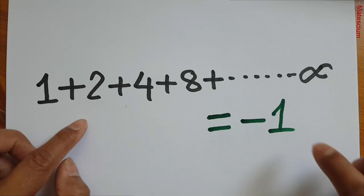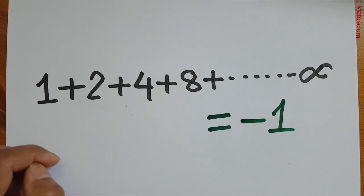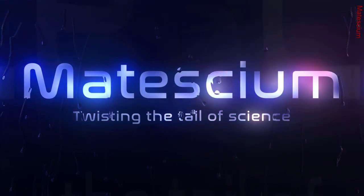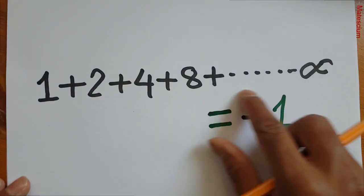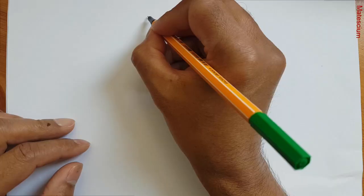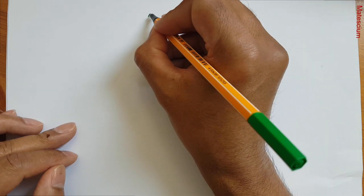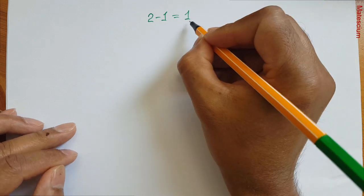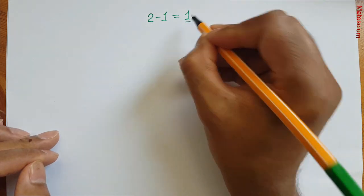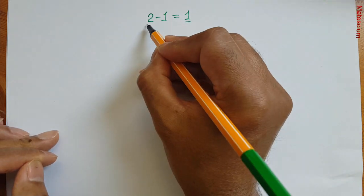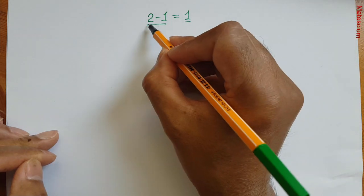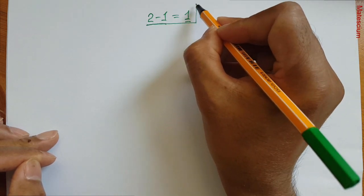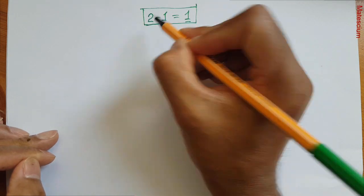Let me show you this series is equal to minus 1 by breaking the rules of mathematics. In order to prove that this long infinite series is equal to minus 1, let's start from the simple way. We know 2 minus 1 is equal to 1. That means we can substitute this 1 by 2 minus 1. I will use this part later on in our calculation — just remember it.